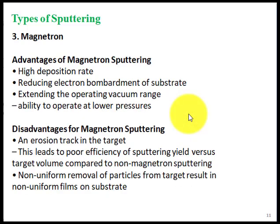Advantages of magnetron sputtering include high deposition rate, reduced electron bombardment of the substrate, and an extended operating vacuum range because it decreases the pressure and can operate at lower pressures. However, there are disadvantages: an erosion track can occur in the target, leading to poor efficiency of sputtering yield versus target volume compared to non-magnetron sputtering, and non-uniform removal of particles from the target results in non-uniform films on the substrate.